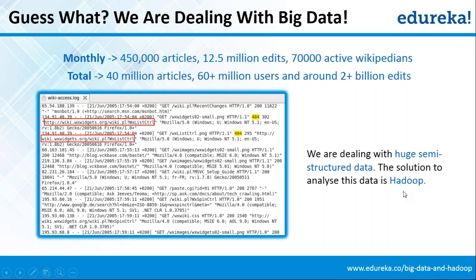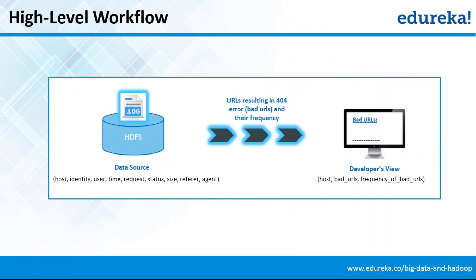What comes to the rescue is Hadoop. This is semi-structured data, huge in size, and it gets populated at a very fast rate. Hadoop is the ideal solution for storing and analyzing it. Our high-level workflow will be: load the wiki access log file onto HDFS. The log file has multiple parameters namely host, identity, user, time, request, status, size, referrer (which is the URL), and agent. As per our problem statement, we need to pass the URLs with status 404 and their frequency to developers via an online interface showing host, bad URLs, and the number of times that URL gives status 404.